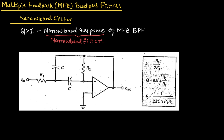The voltage gain for this circuit can be given as AV = minus R2 divided by 2R1, where R1 and R2 are the resistors connected in this circuit. The quality factor can be given as 0.5 multiplied by the square root of R2 divided by R1. The center frequency can be given as 1 divided by 2πC into the square root of R1 times R2. This is the multiple feedback band pass filter.